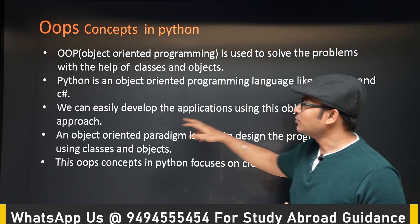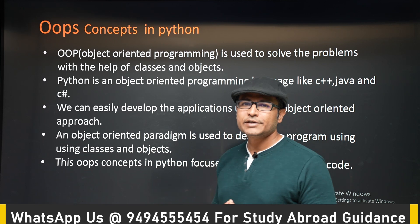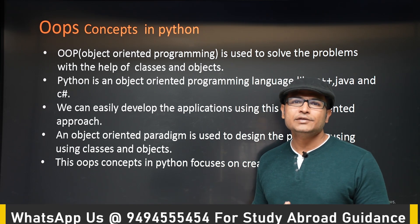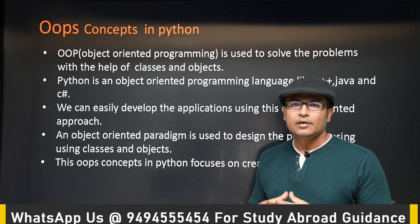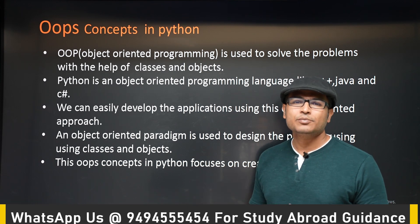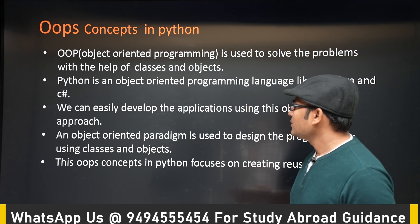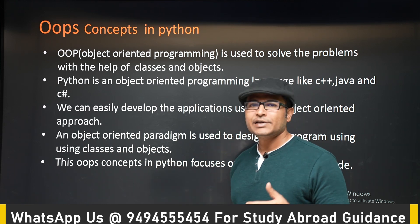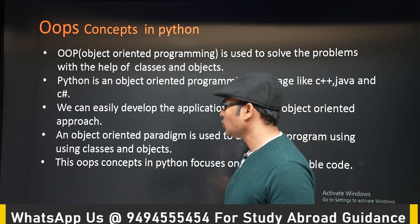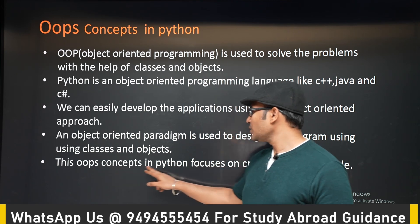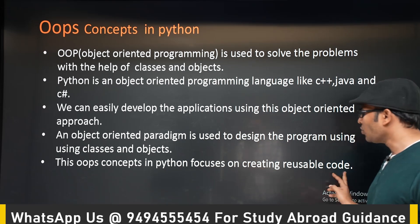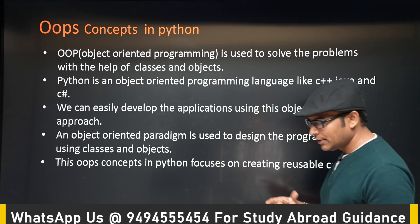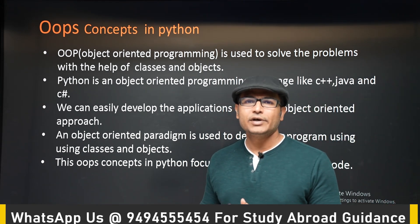Object-oriented programming is used to solve problems in an easy way using objects and classes. Python is an object-oriented language just like C++ and Java, and we can easily develop applications using an object-oriented approach. It will be easy to develop a very big project this way. If the project is very small, procedural programming will be easier, but if the project is very big, object-oriented programming is always preferable. OOP focuses on creating reusable code — that is the most important benefit.